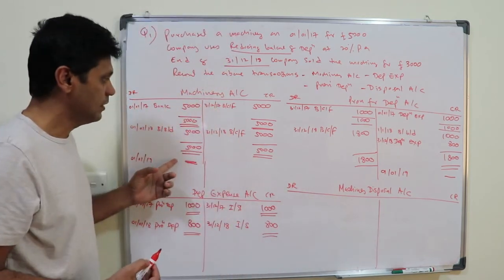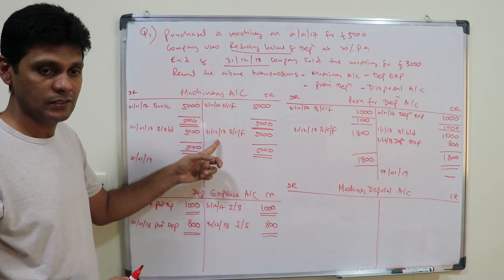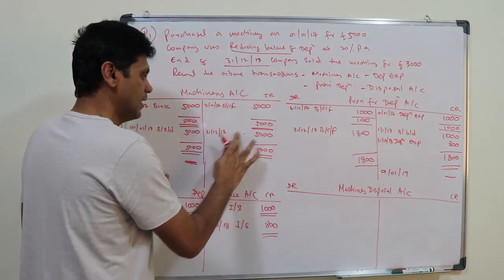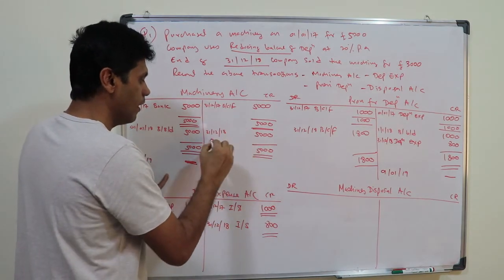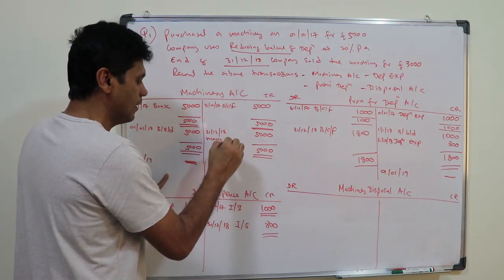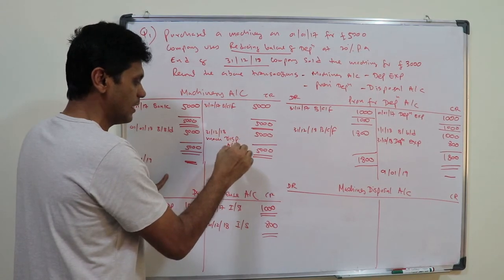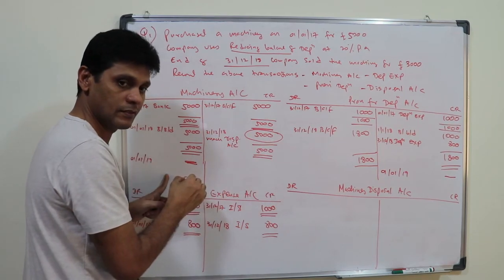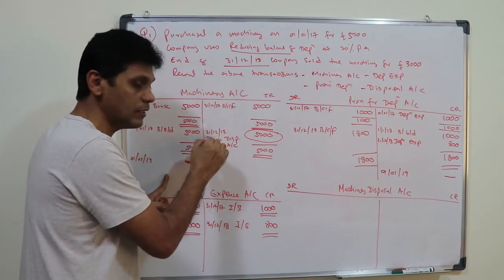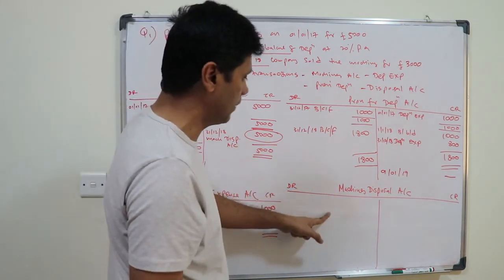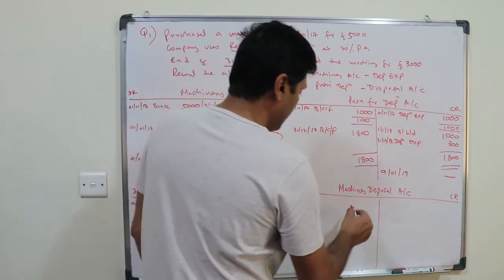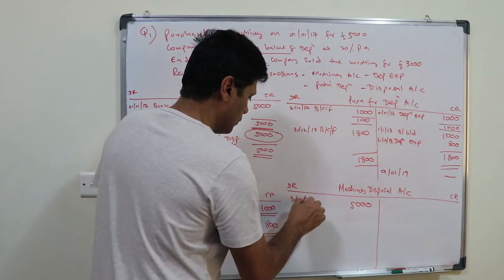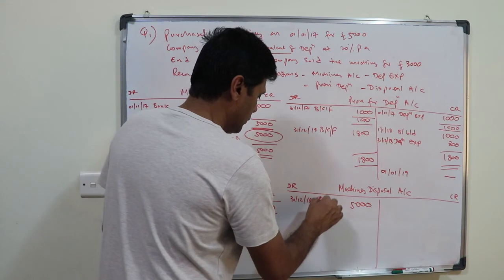The first step is to transfer and remove the machinery account from the books. Instead of carrying it forward, write 'machinery disposal account.' Debit the disposal account five thousand and credit the machinery account five thousand on 31st December 2018.